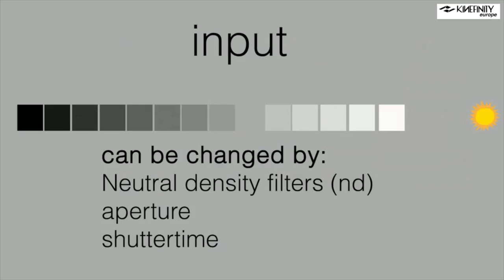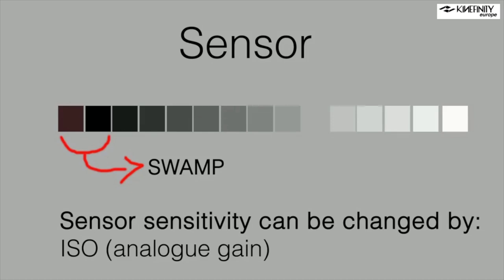This is a very important part — the input of a sensor is the light which enters the lens. In a typical example you see around 14 stops of light in a normal daylight scene with high contrast — deep shadows and very high highlights in clouds and building reflections. The Mavo LF sensor has three lower stops I call the 'swamp': the deeper you go in there, the more noise and the harder it is to resolve a decent picture. You want to stay out of that swamp. The input can be changed by adding ND filters, changing the aperture, or changing the shutter time.